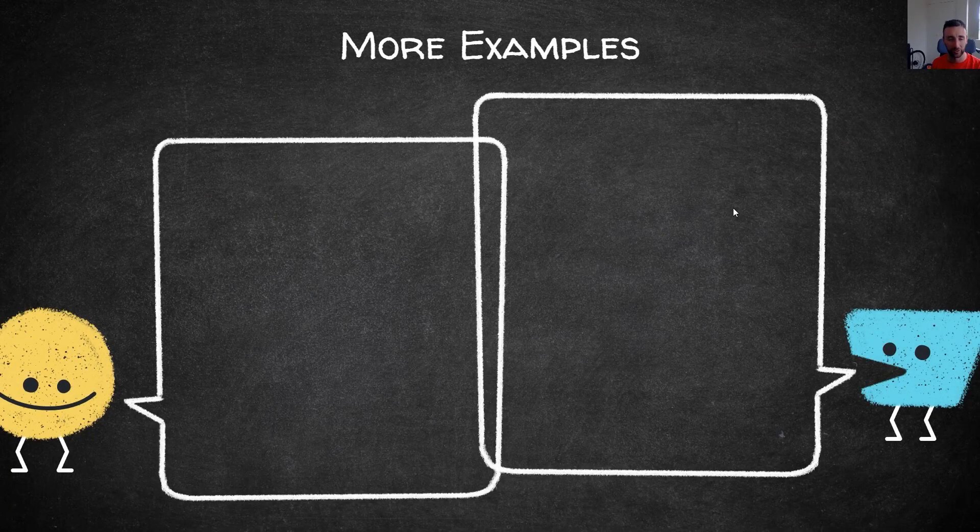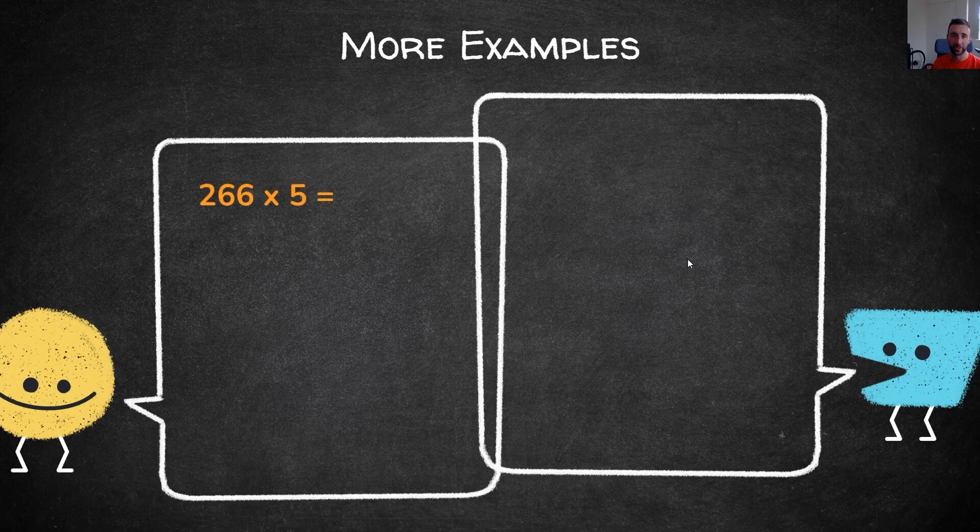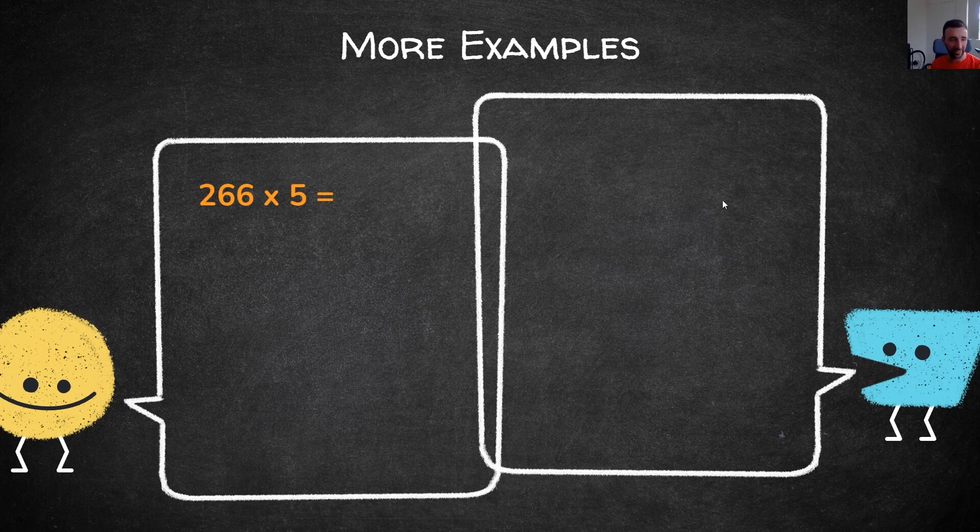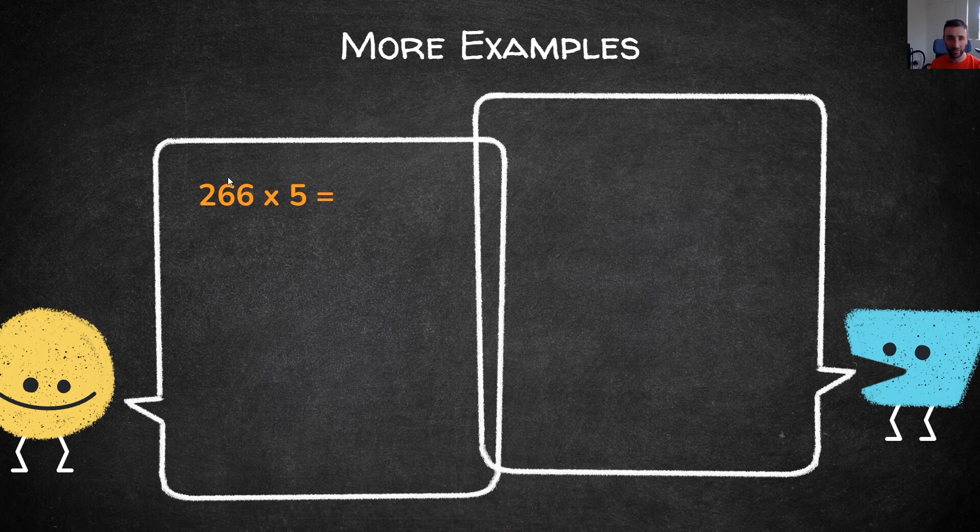A couple more examples, these ones are a bit harder. We've got three digits. The method stays exactly the same, however this time instead of partitioning to tens and ones, we partition into hundreds, tens and ones.